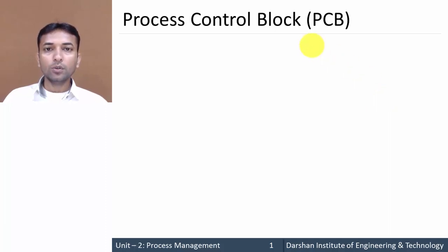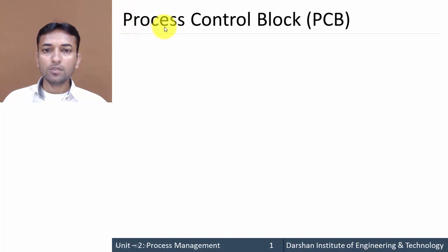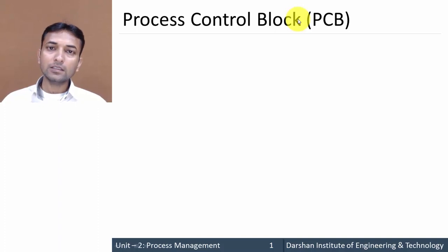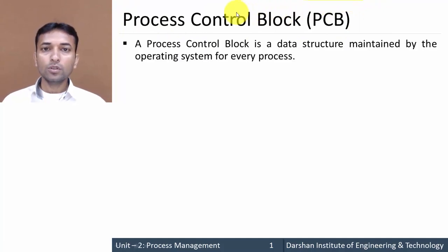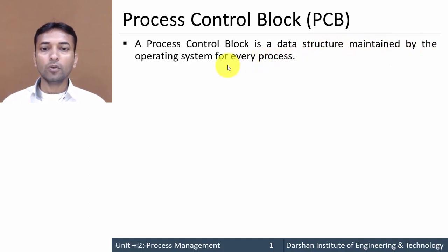In this video we will learn about PCB, that is Process Control Block. It is called a 'block' because it contains and stores information that is used to control the process. The definition of PCB or Process Control Block is that it is a data structure maintained by the operating system for each and every process — meaning each process has its own PCB.